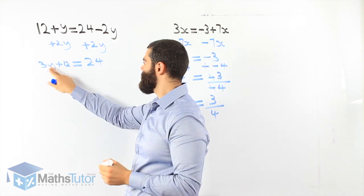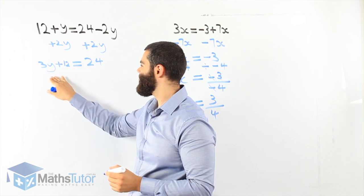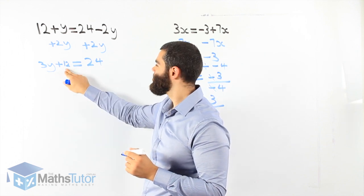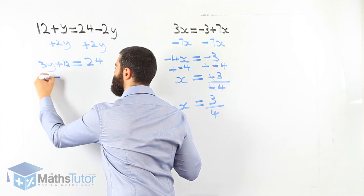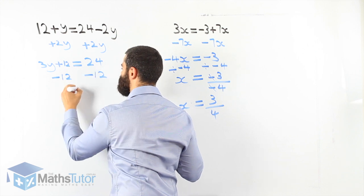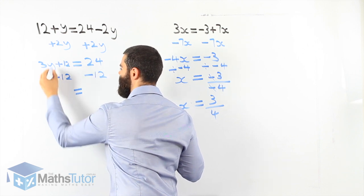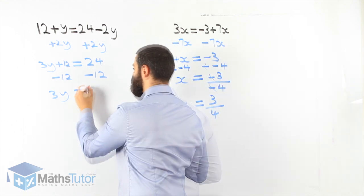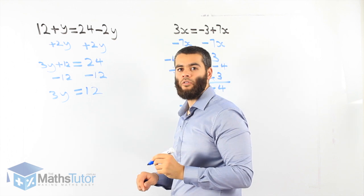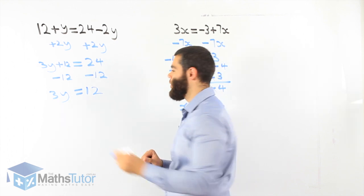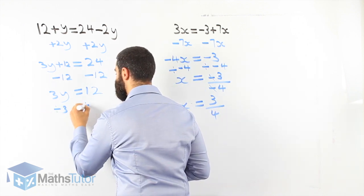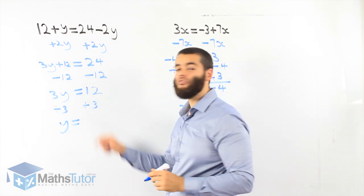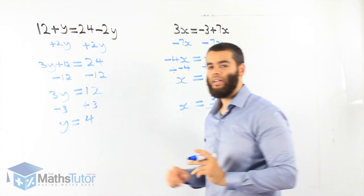Now we have 3y plus 12. We want to get rid of both numerals and leave y by itself. We start with the furthest one away from y, which is the positive 12. Positive 12 becomes minus 12 on one side, minus 12 on the other. 12 minus 12 is gone, and 24 take away 12 is 12. So 3y equals 12. We divide by 3 on both sides. 3 divided by 3 leaves 1y, and 12 divided by 3 is 4. y equals 4.